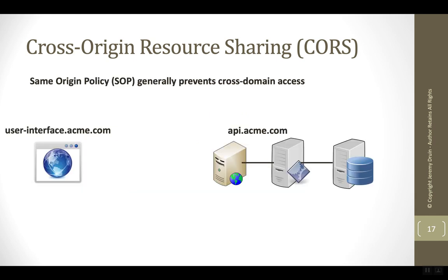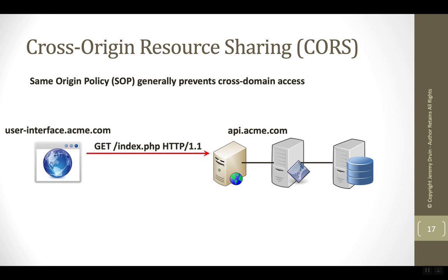Usually, in a regular request, if we have two different domains, the request would go out from the first domain over to the second domain, and this is never blocked by same origin policy. Same origin policy doesn't block requests — it only blocks responses. So the request would work fine, and the API would receive the request.